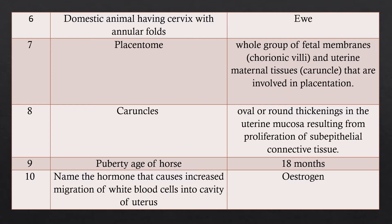Question 8: What are caruncles? Answer: Caruncles are oval or round thickenings in the uterine mucosa resulting from proliferation of sub-epithelial connective tissue of the uterus.